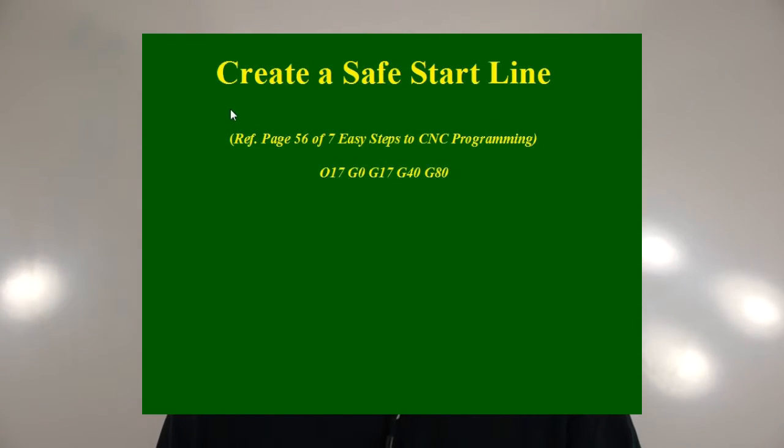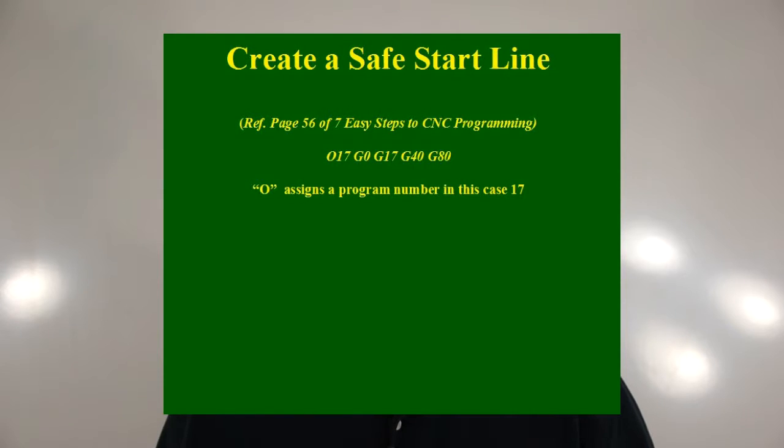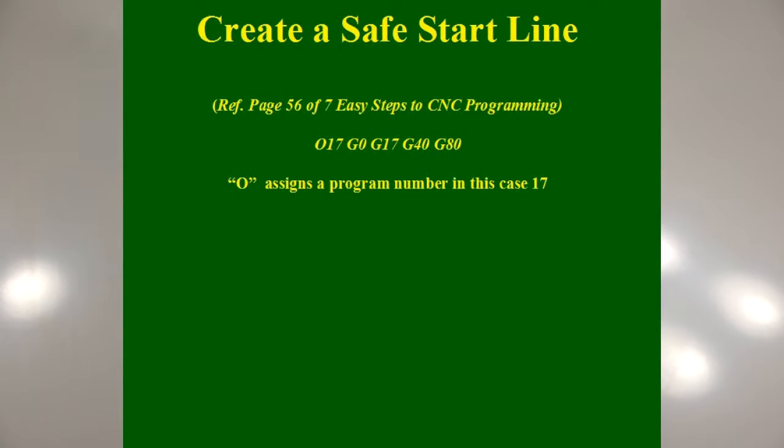So the first thing we're going to do is look at the safe start line, which will be the first line of our G-code program. The first line usually starts with the letter O followed by some number, which assigns a program number to that program. In the book on page 56, our program starts with O17, meaning our program number is going to be 17.